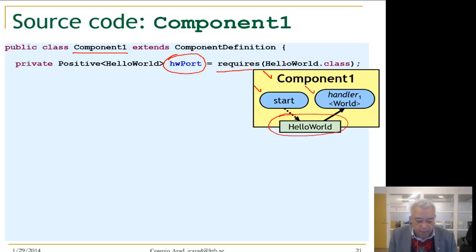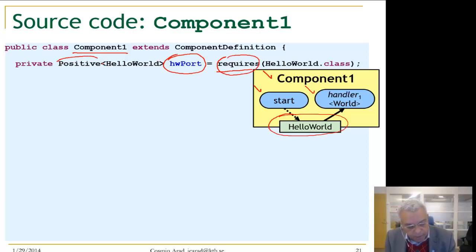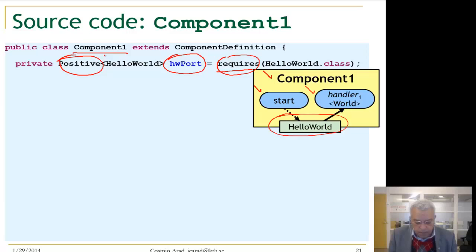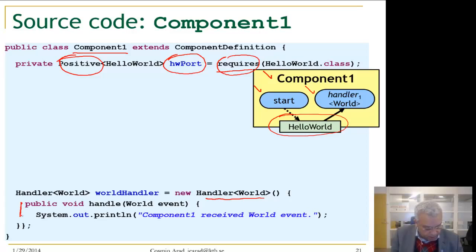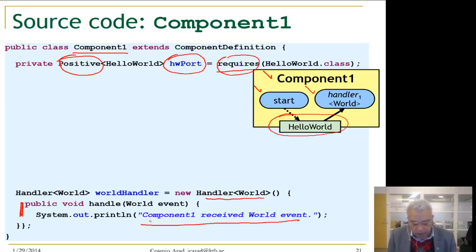So we have a required port. We now define the world handler. The world handler code, whenever it receives a world event, simply prints out that component 1 received the world event. The world handler has no parameters in its constructor.